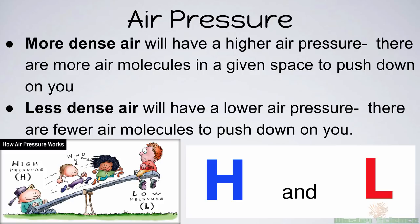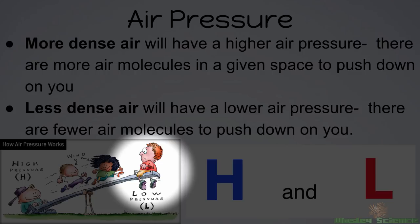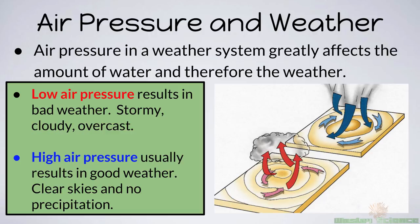When the air is more dense, it will have a higher air pressure with more air molecules in a given space pushing down. When the air is less dense, it will have a lower air pressure. Generally, air moves from a high pressure system to a low pressure system — that's what determines wind direction. In weather, we mark high pressure areas with a blue capital H and low pressure areas with a red capital L. Air pressure greatly affects evaporation, precipitation, and therefore the weather.